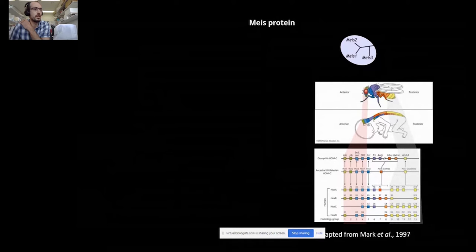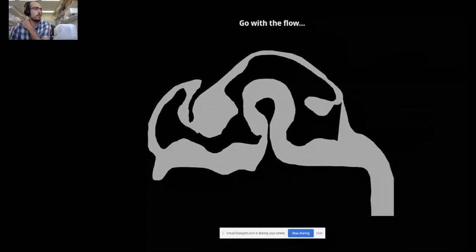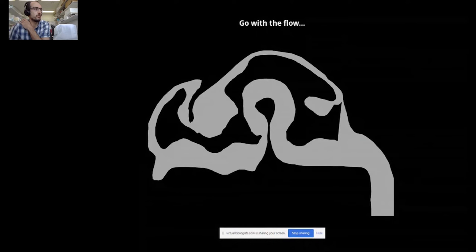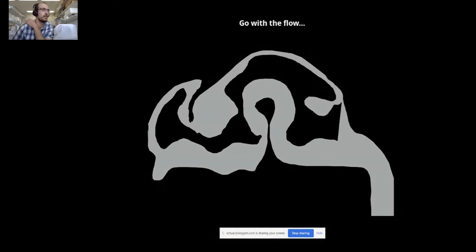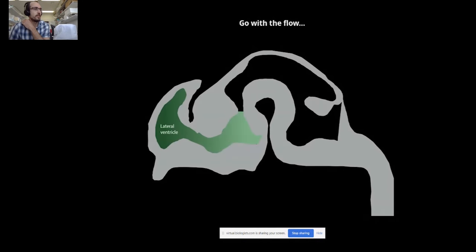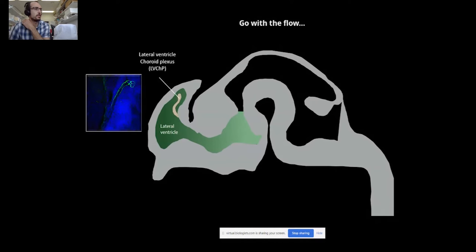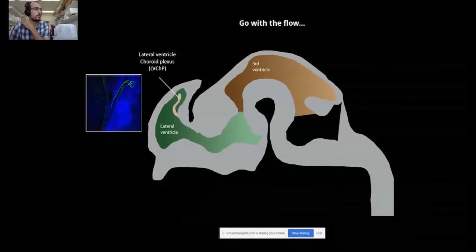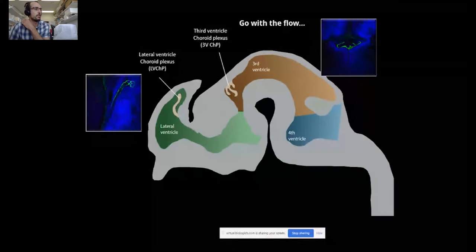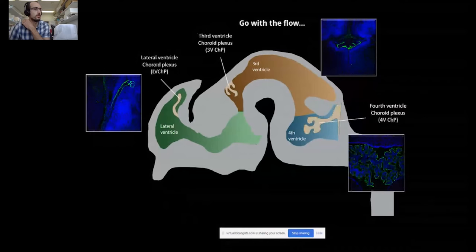Another important piece of the puzzle today is the choroid plexus. To introduce it, I will first mention that the central nervous system contains a network of cavernous spaces called ventricles that contain cerebrospinal fluid. On this schematic picture you can see a section of the mouse embryonic brain where you can distinguish the lateral ventricle containing the lateral ventricle choroid plexus, then the third ventricle with the third ventricle plexus, and finally the most caudally located fourth ventricle containing the fourth ventricle choroid plexus.